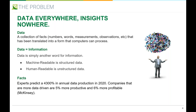We have what is called machine-readable, which is structured data, or human-readable, which is unstructured data. If I take a picture and put it on the web and tag it, that tag is structured — but what is contained in the image and my inference about it would be unstructured data. Experts predict there's going to be a over 4,000 percent increase in annual data production. Companies that are more data-driven are 5% more productive and 6% more profitable.